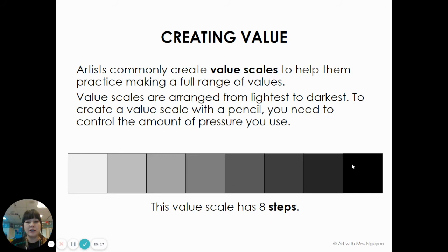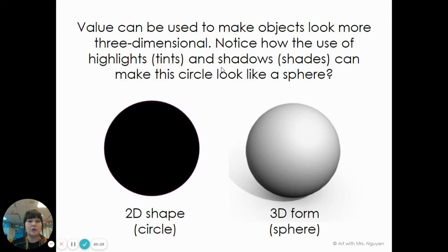Value can also be used to make your objects look three-dimensional. If you just draw a circle and color it with black, that's going to be a shape because it's flat. But if you have a circle and color in different areas to make it look like there are shadows and lights, then it's going to turn into a 3D form, which is a sphere. By using value, you can make your artwork look three-dimensional and realistic.